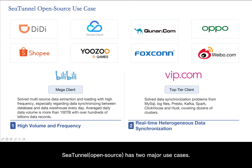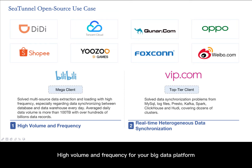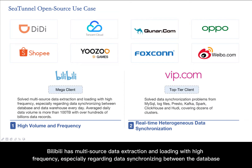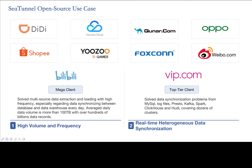C-Tunnel open-source has two major use cases: high volume and high frequency for your big data platform. C-Tunnel supports multi-source data extraction and loading with high frequency, especially for synchronizing between databases and data warehouses every day. Average daily data volume is more than 100 terabytes with over hundreds of billions of data records.